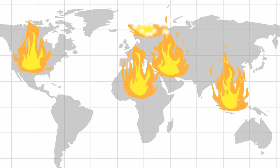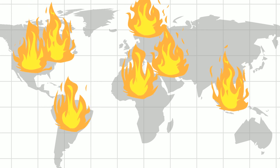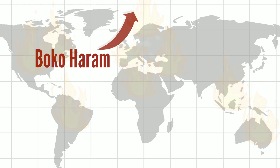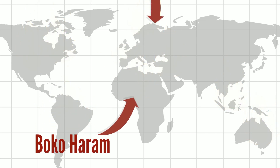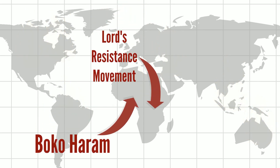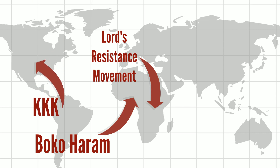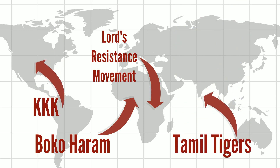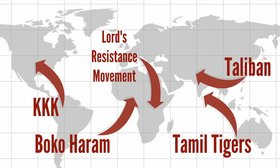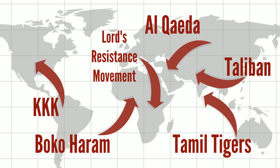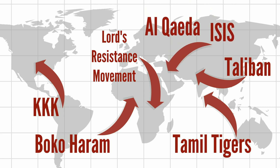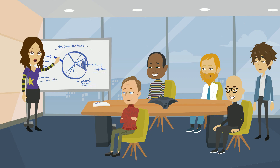Unfortunately, our world also faces the threat of religious violence. There is Boko Haram in Nigeria, the Lord's Resistance Movement in Uganda, the Ku Klux Klan in the United States, the Tamil Tigers in Sri Lanka, the Taliban in Afghanistan, and in the Middle East there are Al Qaeda and ISIS. Modeling and simulation can help us understand these groups better.